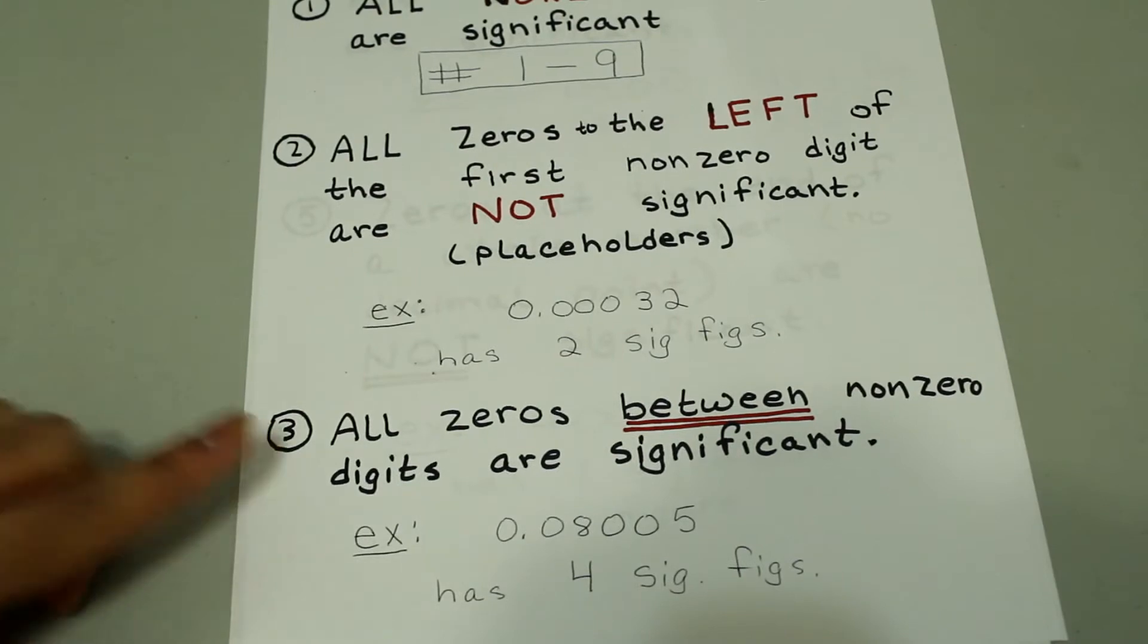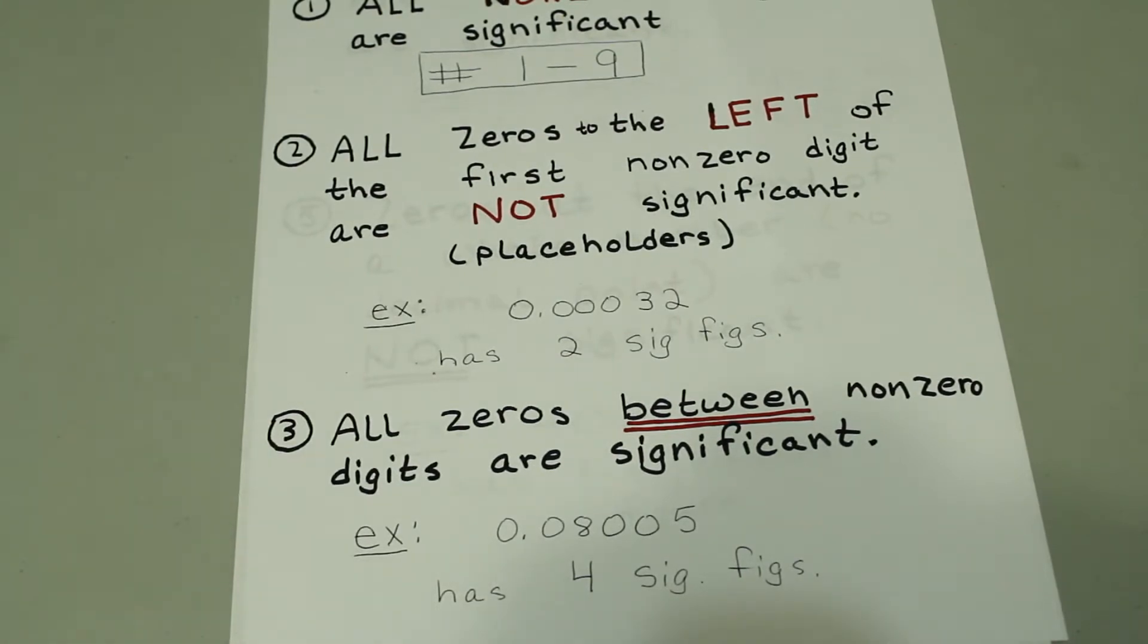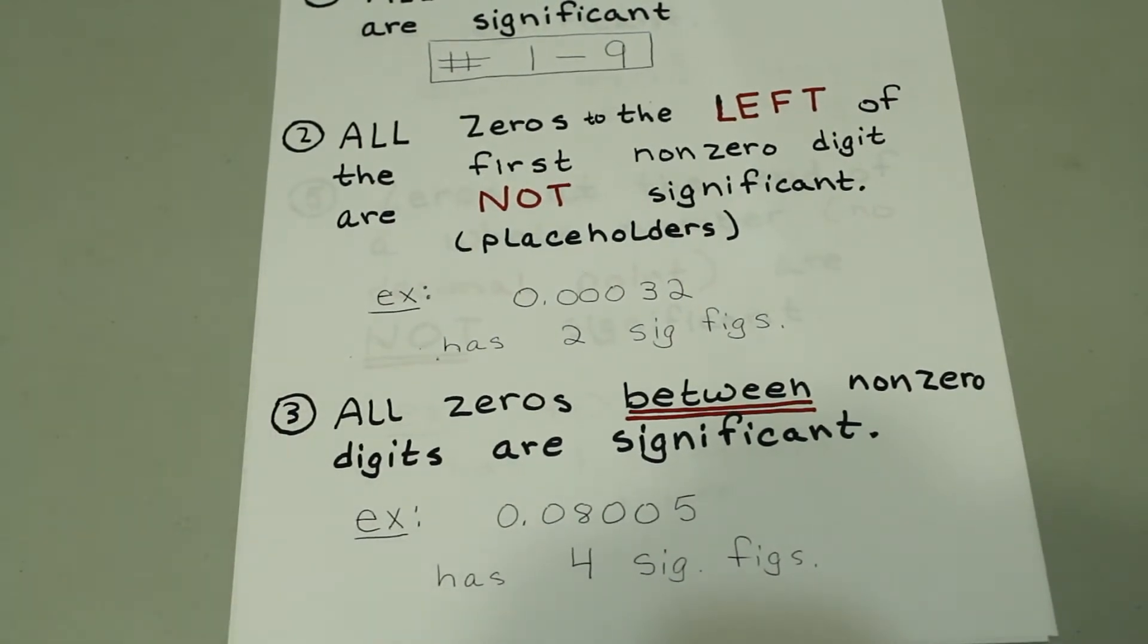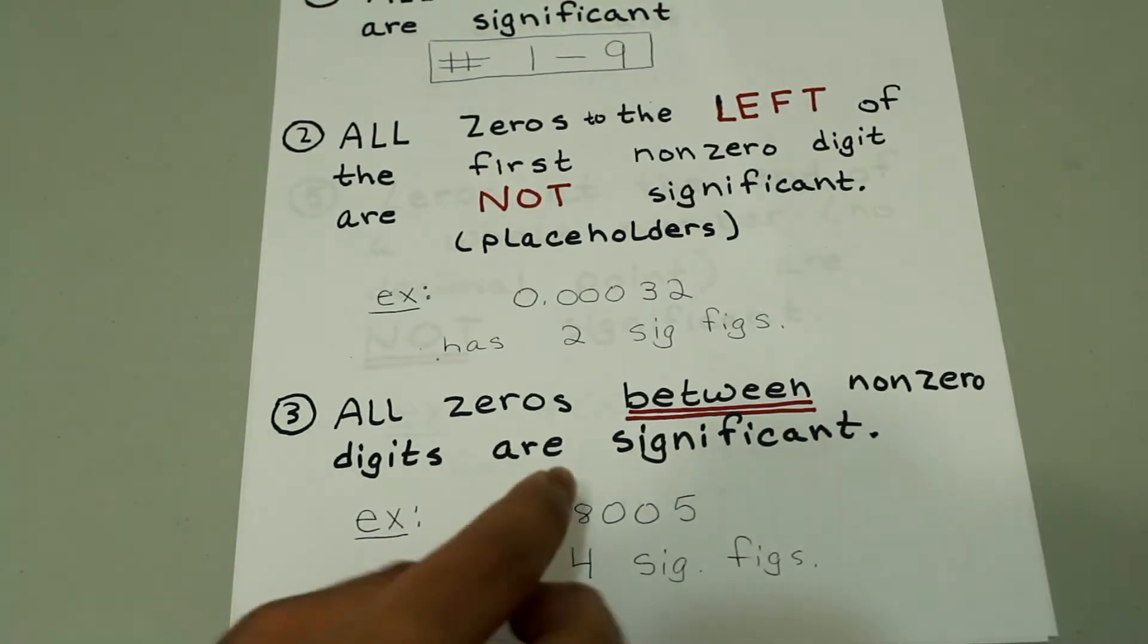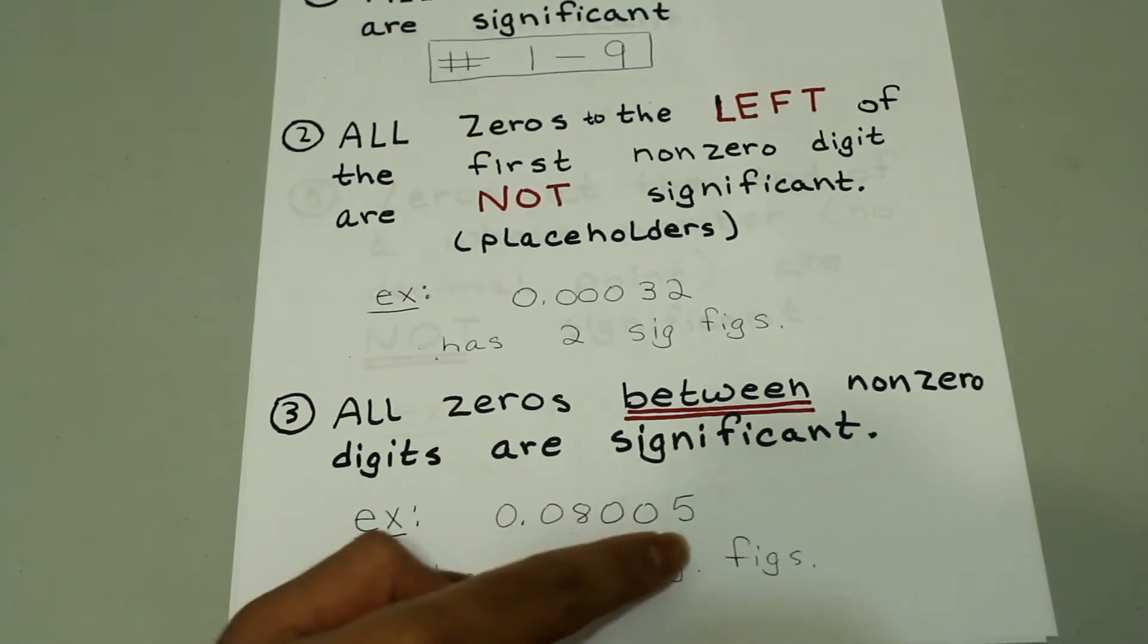If we have zeros between non-zero digits, all of those zeros are significant. So in this example, we have 0.08005. And in this case, we have four significant figures. That's the eight, the two zeros, and the five.